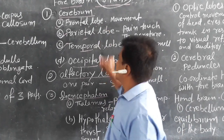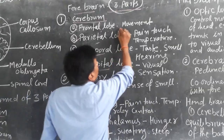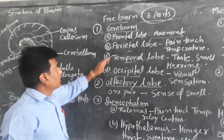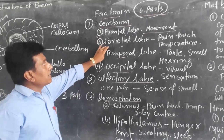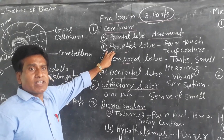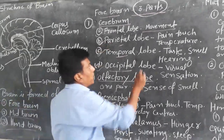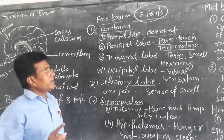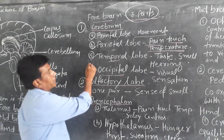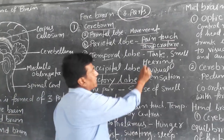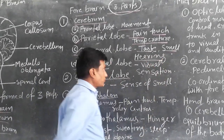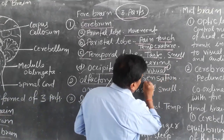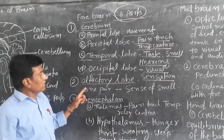The cerebrum is further divided into four lobes. The frontal lobe is responsible for movement. The parietal lobe is responsible for pain, touch, and temperature. The temporal lobe is responsible for taste, smell, and hearing. The occipital lobe is responsible for visual sensation.